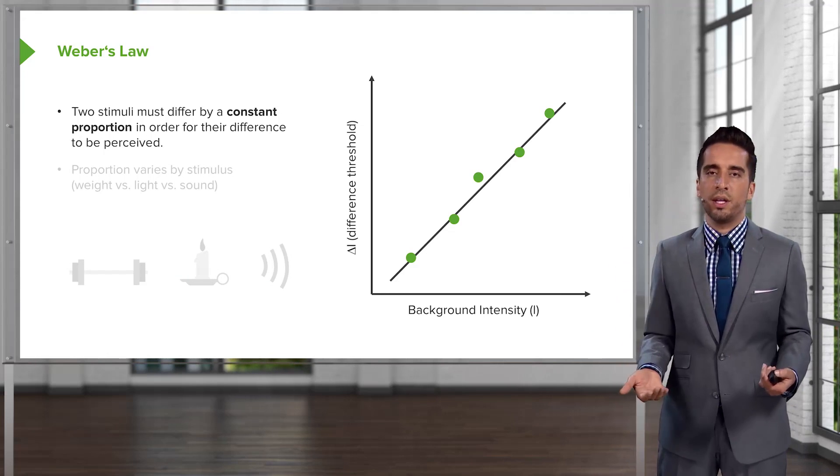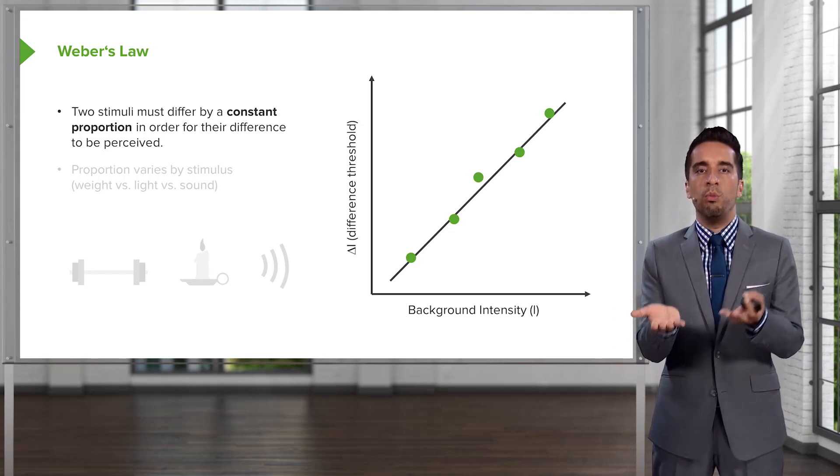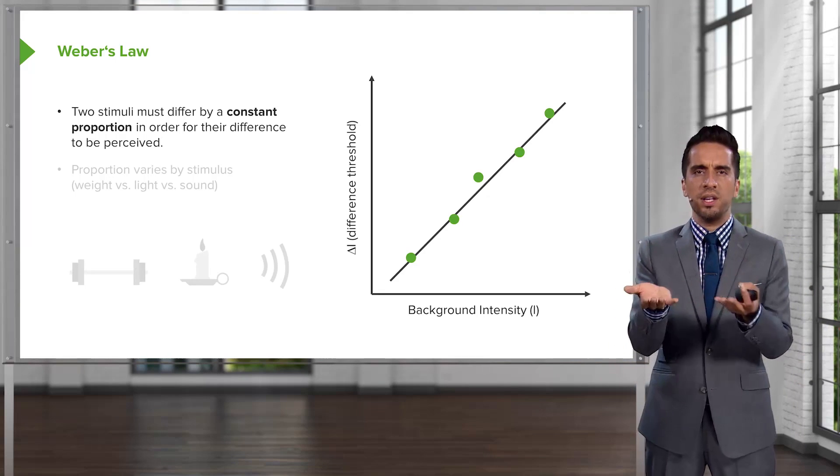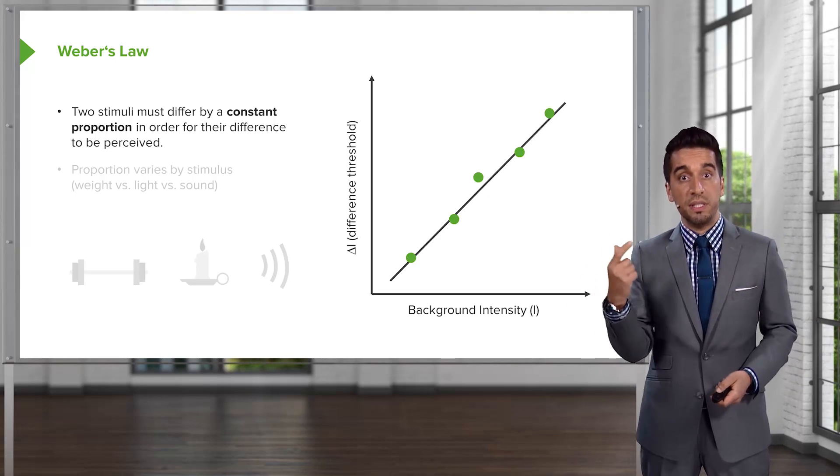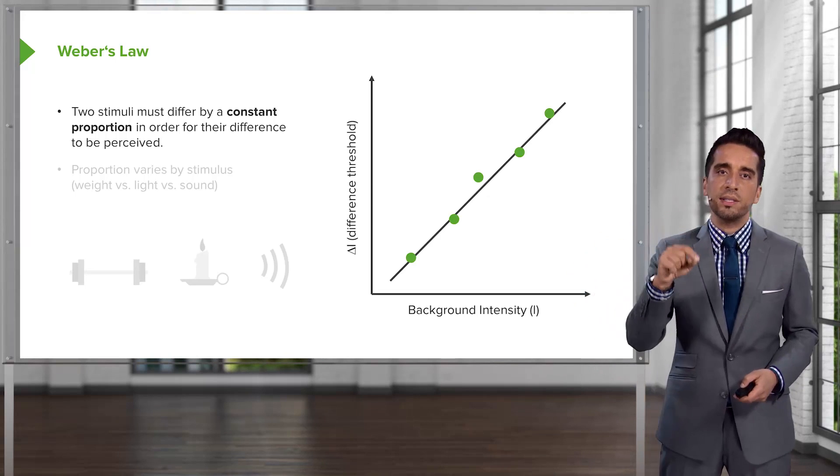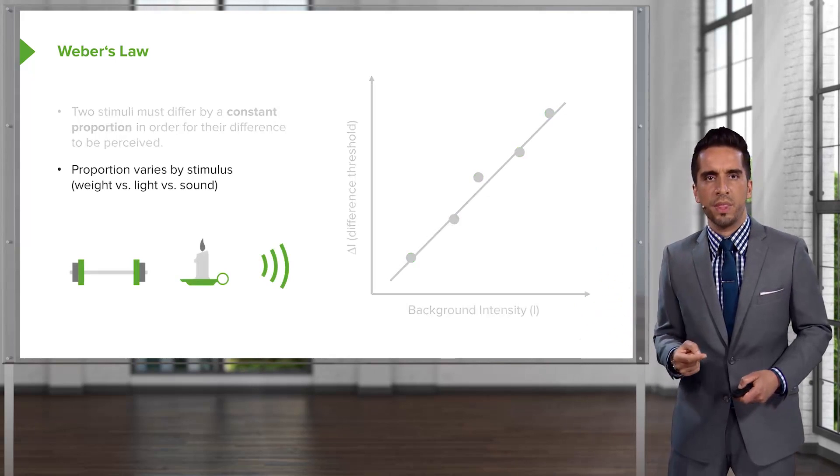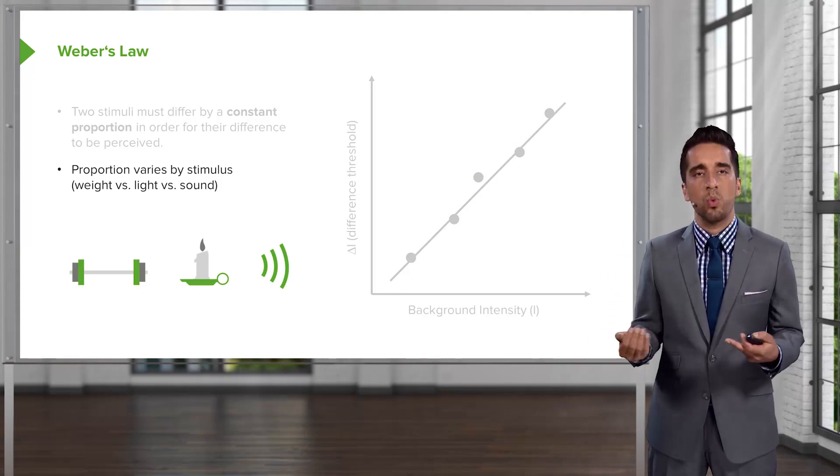So, in English, if we're starting with paper or if we're moving to a textbook, it kind of doesn't matter because you're going to need a certain proportion of difference for that to be detected. So that delta is difference threshold or the JND. And it kind of depends on the medium as well.